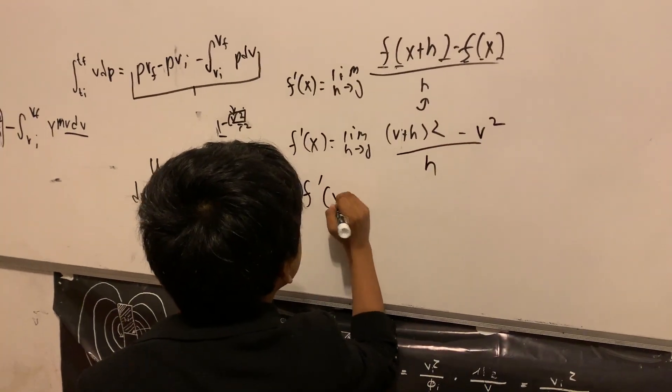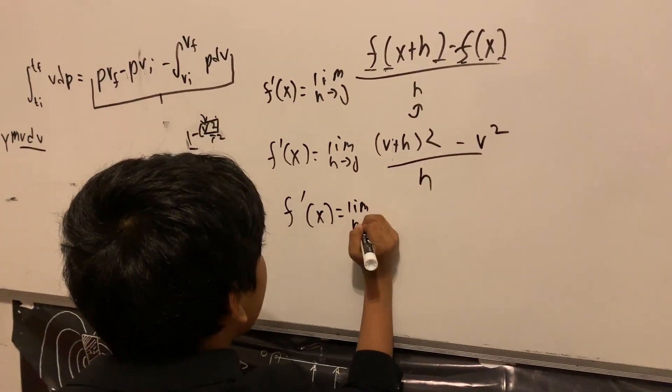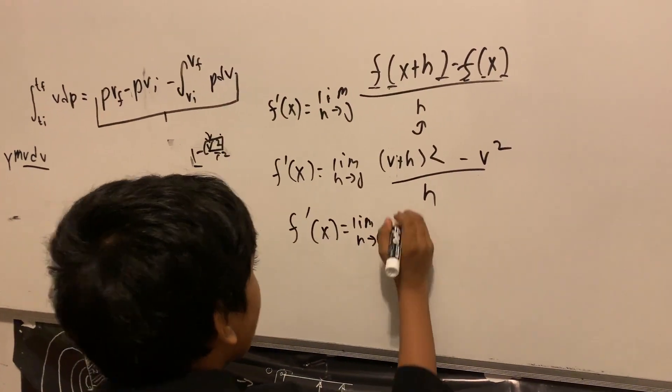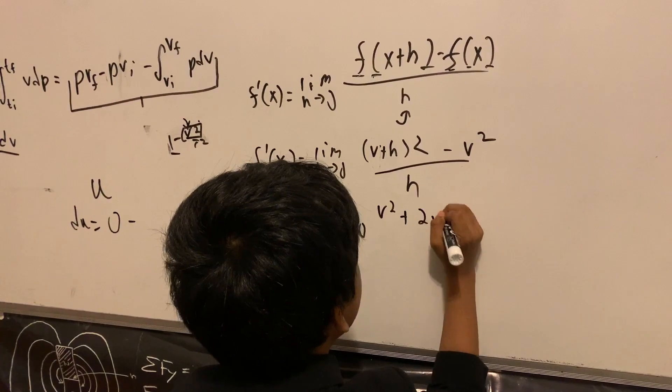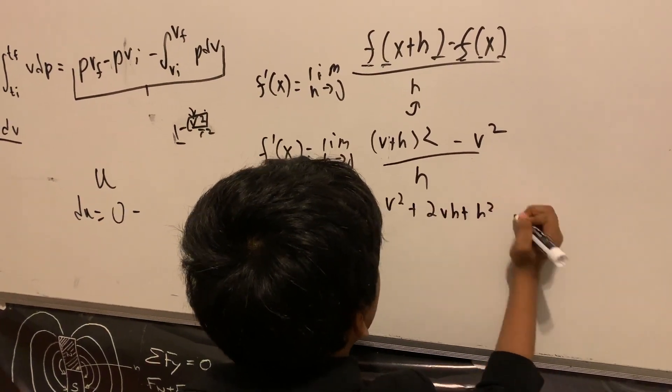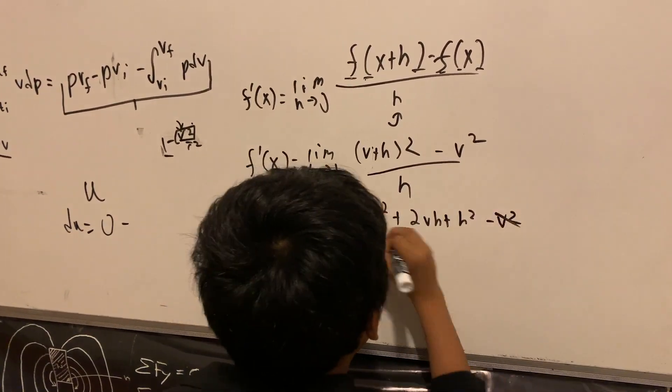That gives us, if we put the expanded trinomial form here, V squared plus 2VH plus H squared minus V squared over H.